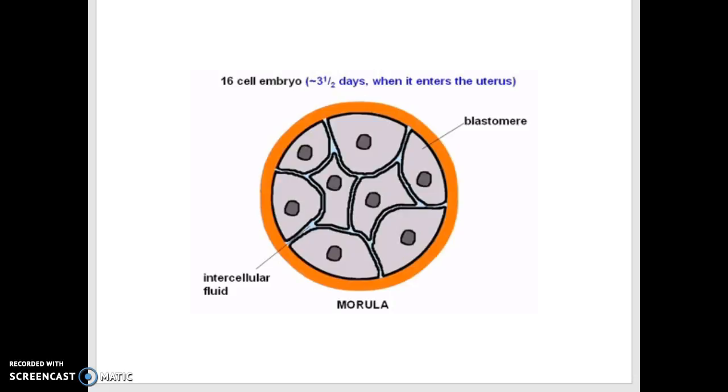This is an embryo with 16 cells called a morula. Each individual cell is called a blastomere. Between the cells is a substance that is known as intercellular fluid. The embryo is still contained by the zona pellucida at this time, which is about three and a half days after fertilization.